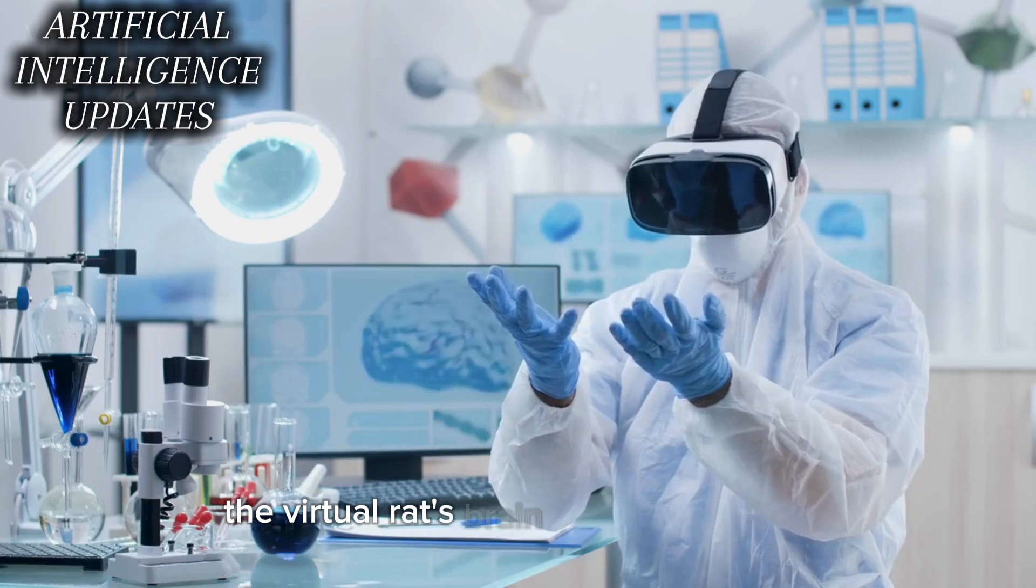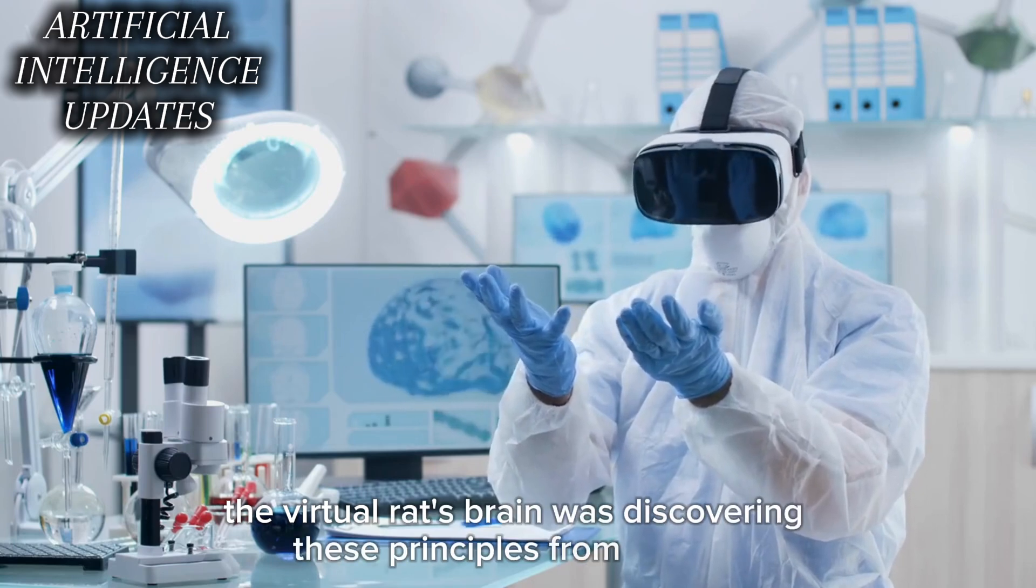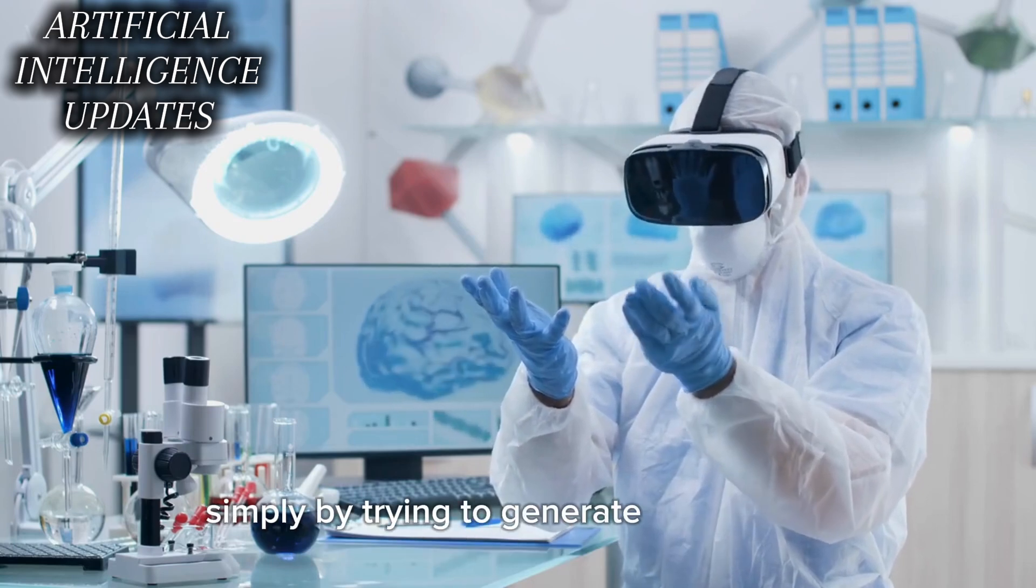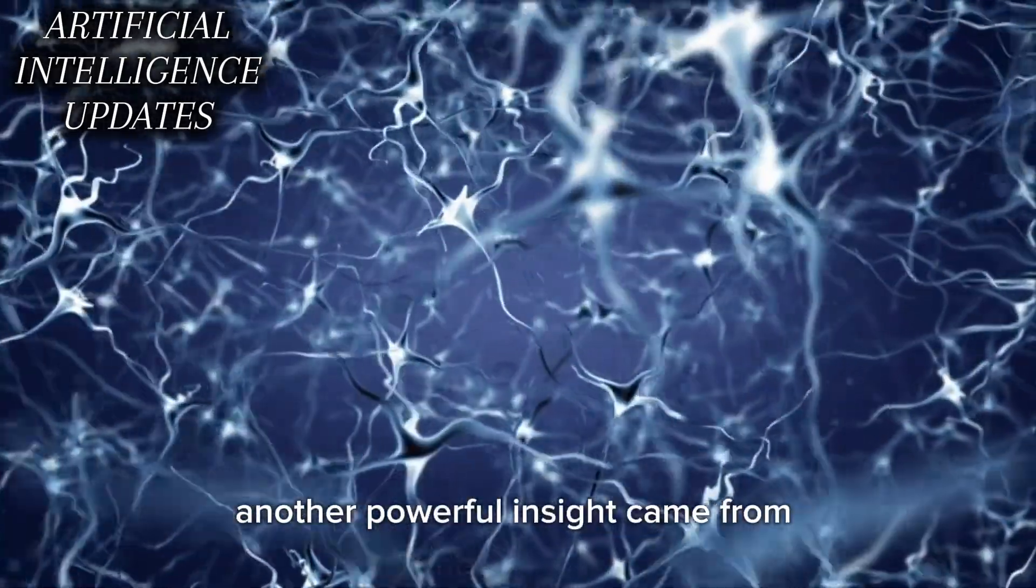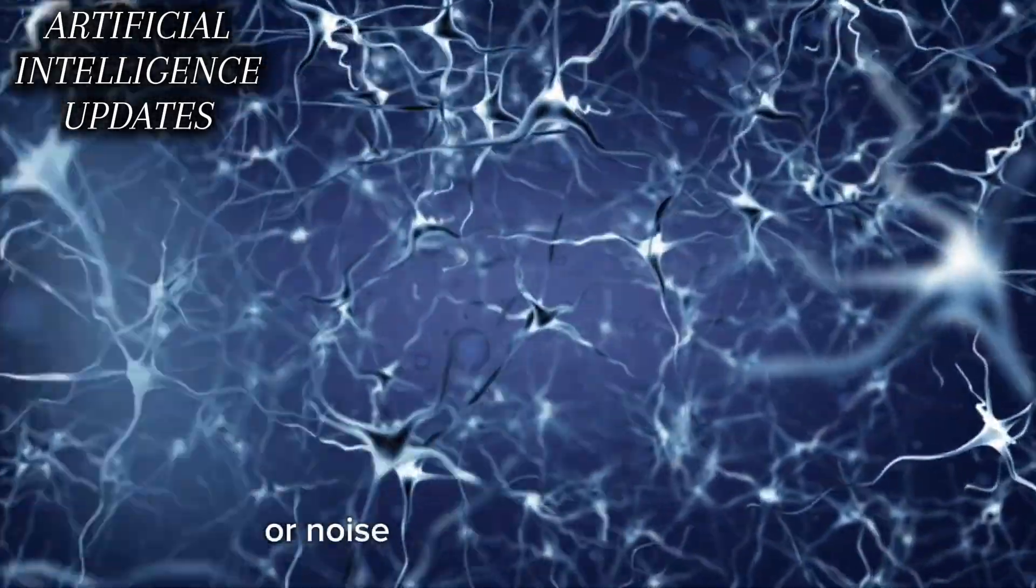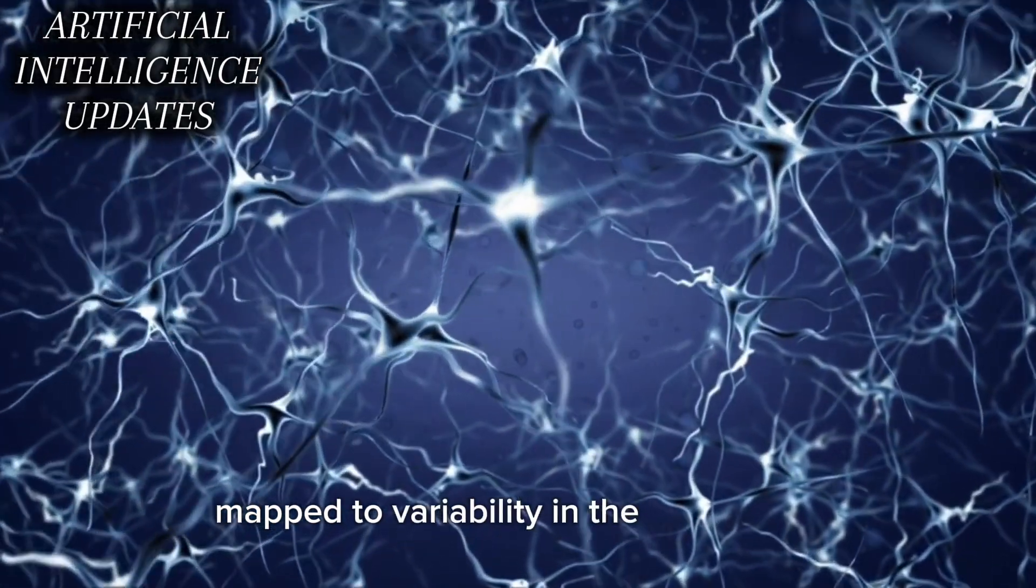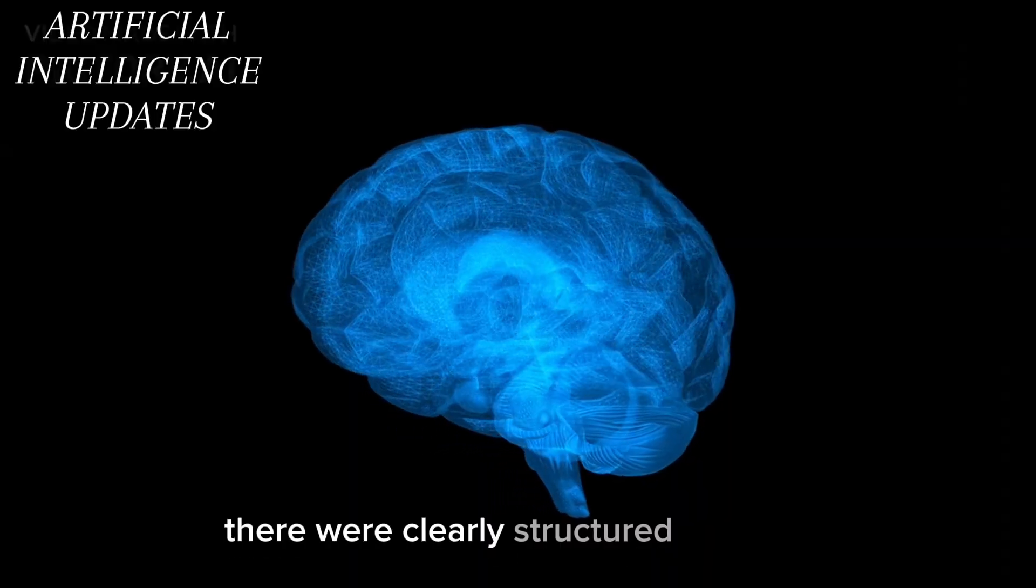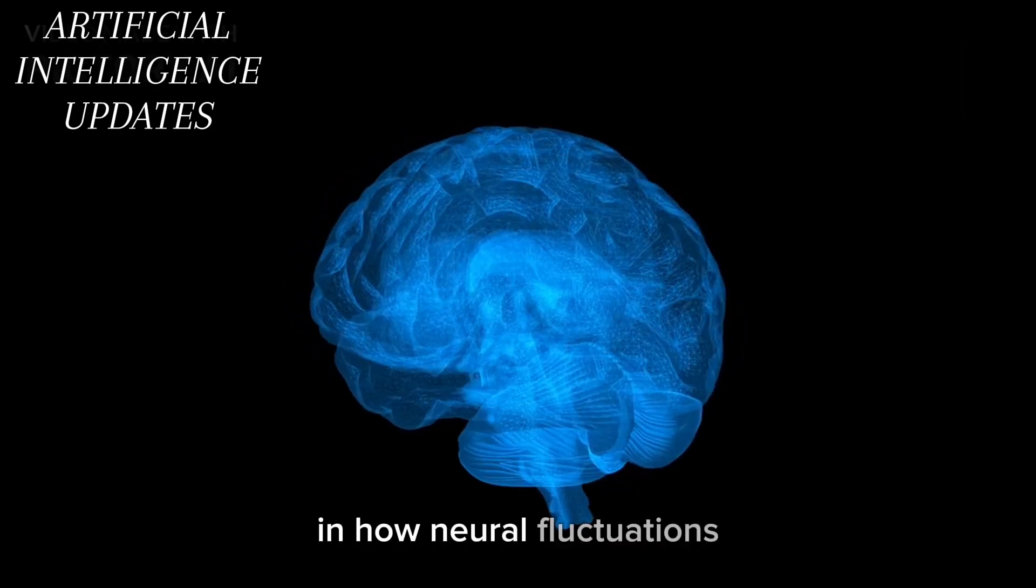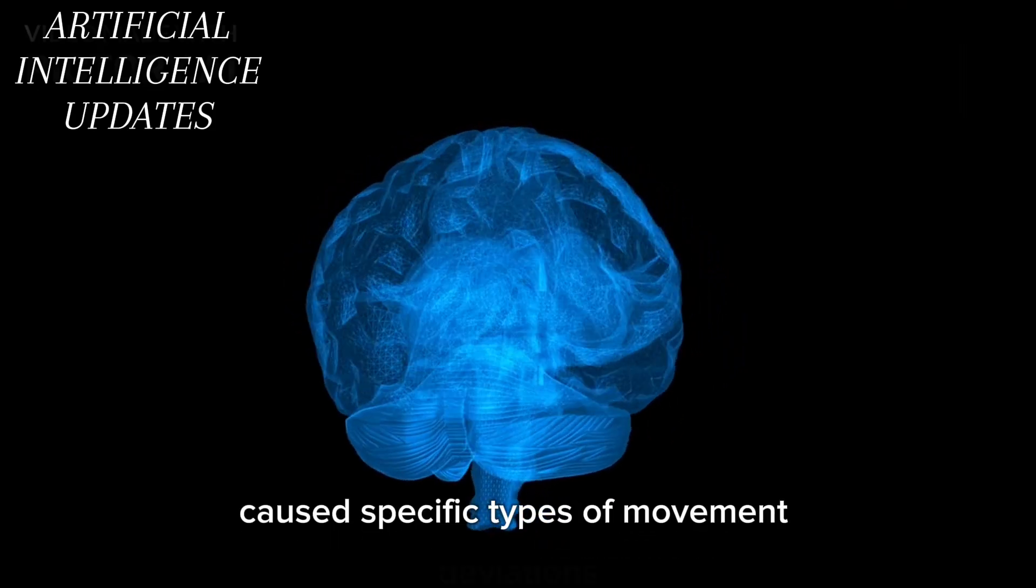The virtual rat's brain was discovering these principles from scratch simply by trying to generate naturalistic movement. Another powerful insight came from analyzing how variability or noise in the neural activations mapped to variability in the virtual rat's kinematics and dynamics. There were clearly structured patterns in how neural fluctuations caused specific types of movement deviations.